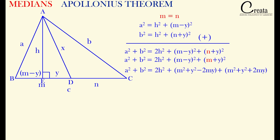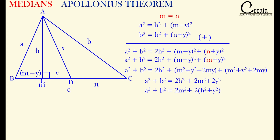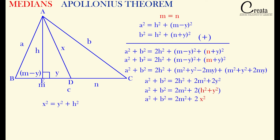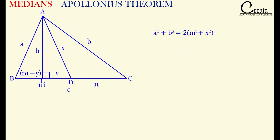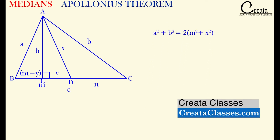Let's expand (m − y)² and (m + y)². On solving, we get 2h² + 2m² + 2y². Taking 2 common from y² and h², we observe that y² + h² = x². Why? If we take triangle AED and apply Pythagoras, we get y² + h² = x². So we can replace y² + h² with x², giving us: a² + b² = 2(m² + x²).